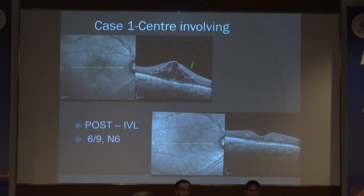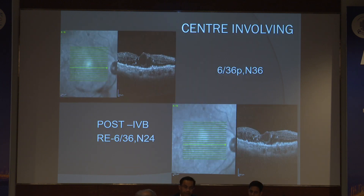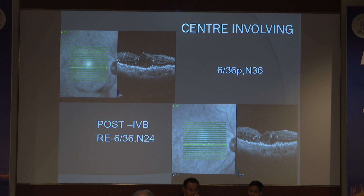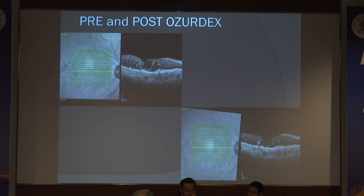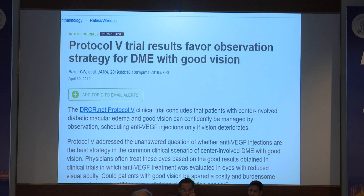A case example: intravitreal injection was given and the patient did very well. Center-involving DME does perfectly well with anti-VEGF itself. Another case with 6/36 vision and center-involving edema: post-IVB there was not much improvement. The patient was then shifted from pre-Ozurdex to post-Ozurdex treatment, illustrating when DEX implants are preferred, especially using OCT findings as a biomarker.